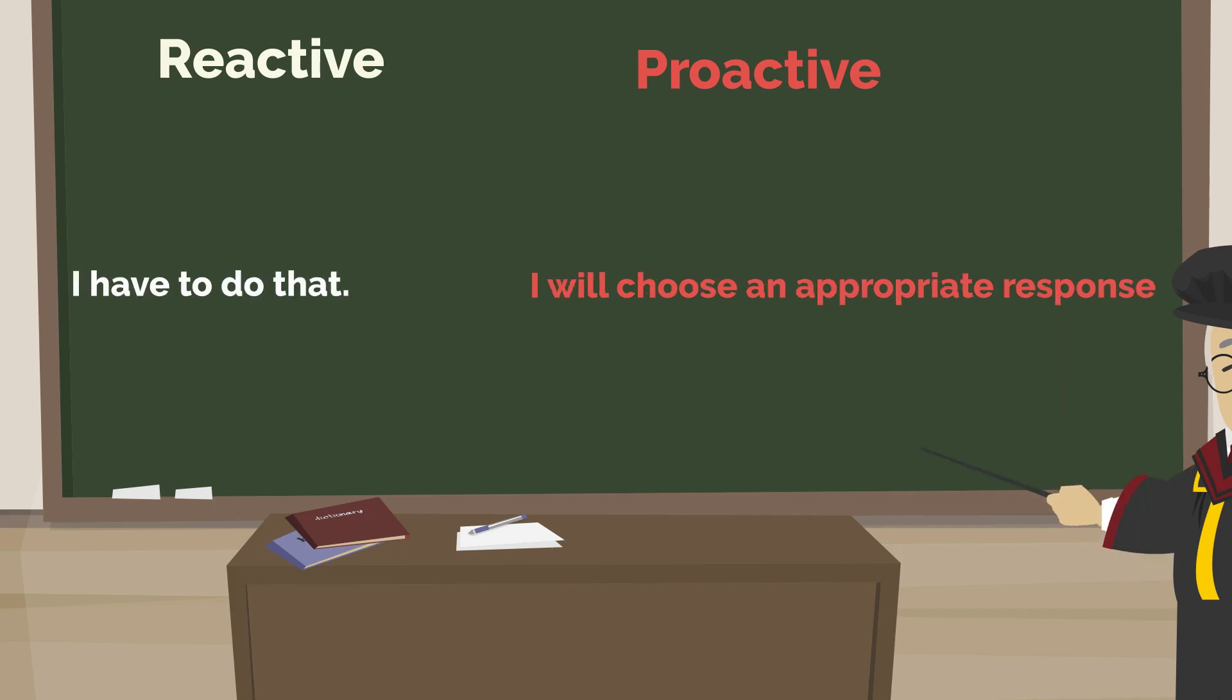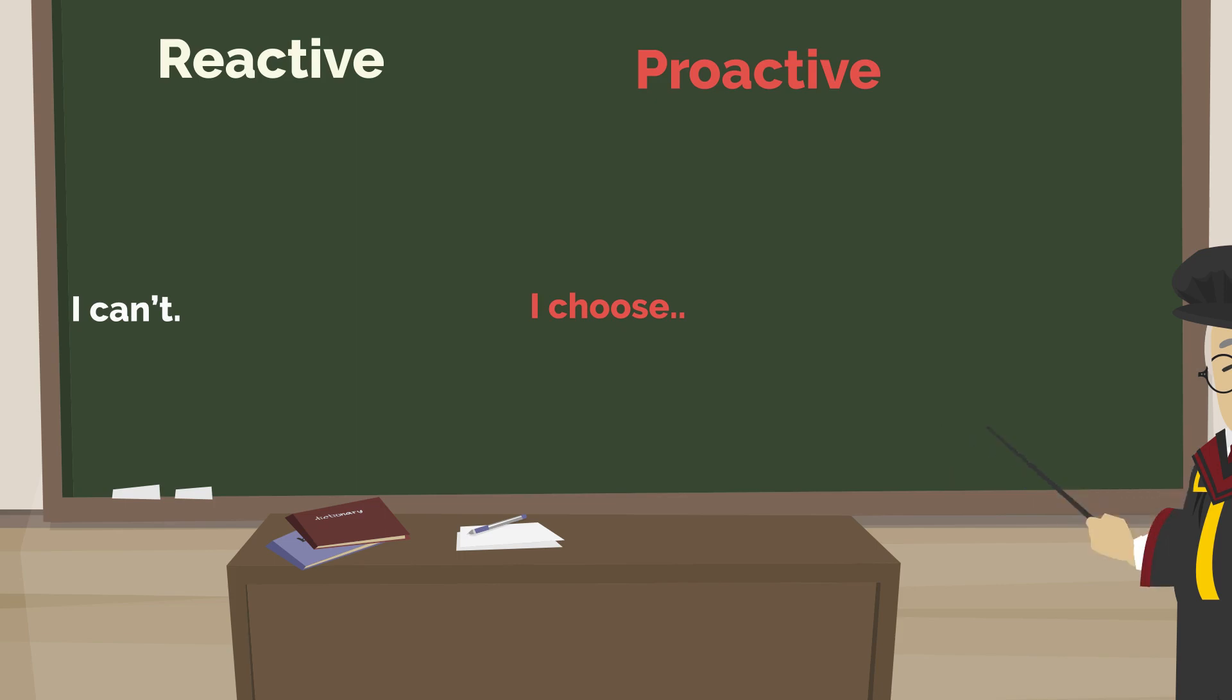Instead of 'I have to do that,' proactive people say, 'I will choose an appropriate response.' Instead of 'I can't,' proactive people say, 'I choose.' Instead of 'I must,' proactive people say, 'I prefer.' Instead of 'if only,' proactive people say, 'I will.'